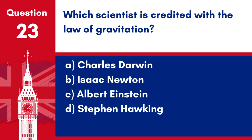Question 23. Which scientist is credited with the law of gravitation? a. Charles Darwin. b. Isaac Newton. c. Albert Einstein. d. Stephen Hawking. Answer: b. Isaac Newton. Sir Isaac Newton is credited with formulating the law of gravitation, a fundamental principle of physics.